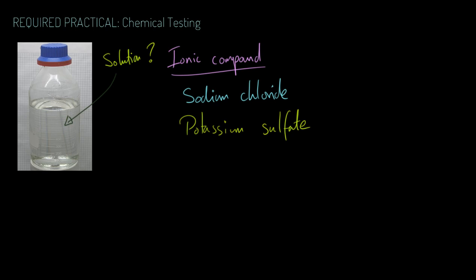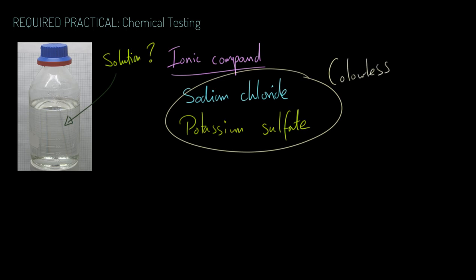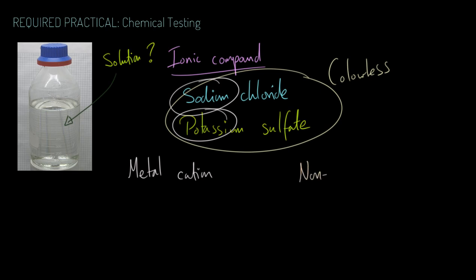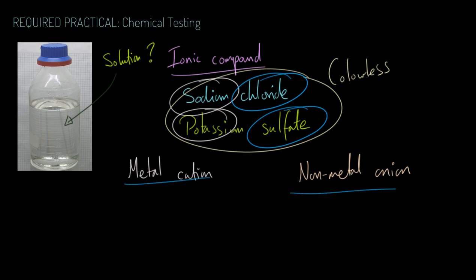Sometimes with solutions of chemicals you get a clue as to what they are from their color, but unfortunately both of these make a colorless solution, so that's no good. If you want to know what's in that solution you're going to have to do some chemical tests. You've got to do this in two stages: stage one, work out what the metal cation is - is it sodium, potassium, or something else - and then job number two, work out what the non-metal anion is, whether that's chloride, sulfate, carbonate, or something else.